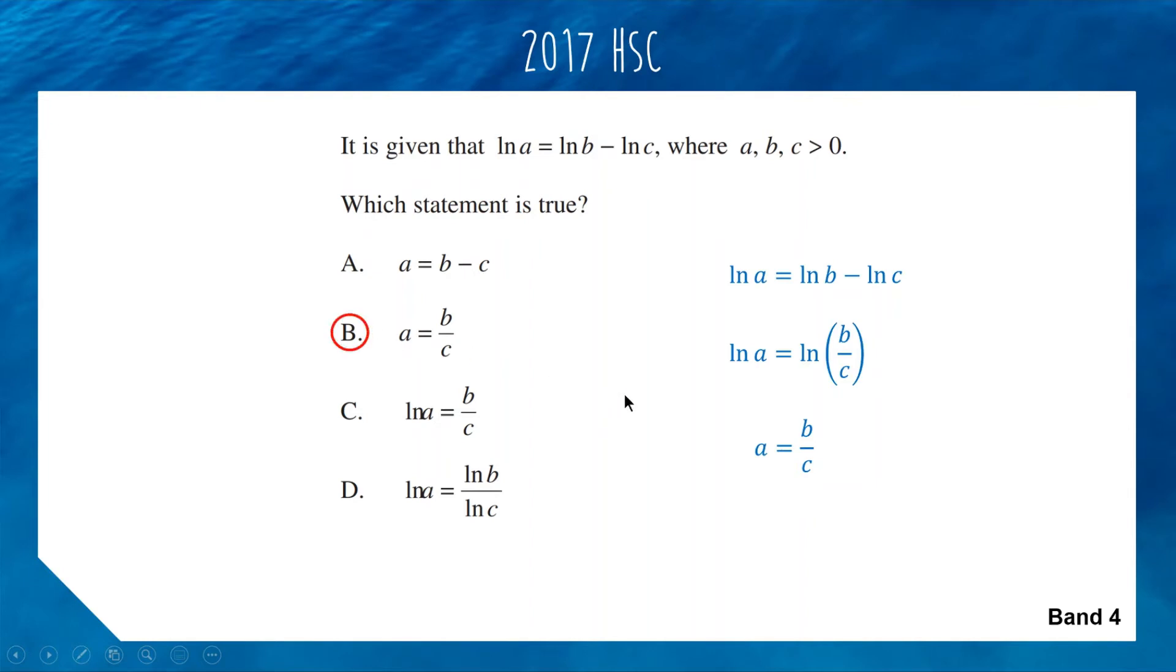I think most people went with option D because they were tricked into thinking you can divide the subjects and cancel off the logarithms. So it is B, but the trick was a lot of people selected D as their answer, which is why it was a band 4 question.